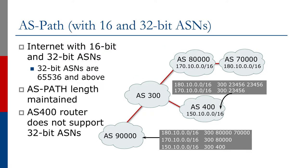The AS path can include a mix of 16 and 32-bit AS numbers. The internet has been using 32-bit AS numbers for probably the last eight or nine years, but there's still some old network equipment in use by some operators that does not support these newer 32-bit AS numbers. The next graphic shows how 32-bit AS numbers would appear in the AS path on an old router.